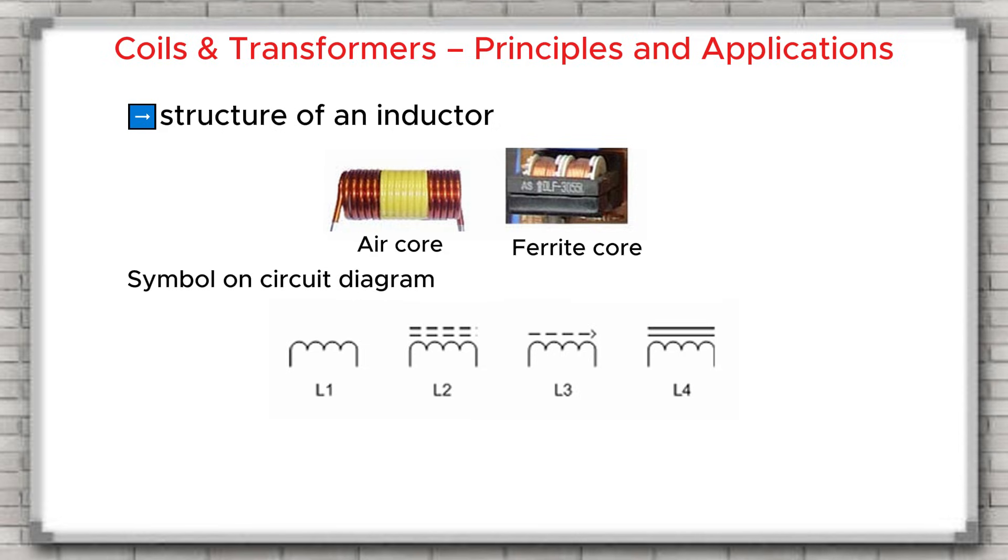On circuit diagrams, we also see different symbols for inductors. L1: air core inductor. L2: ferrite core inductor. L3: adjustable core inductor. L4: laminated iron core inductor.